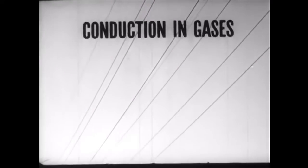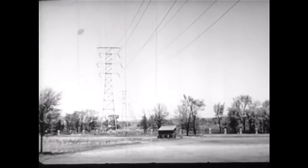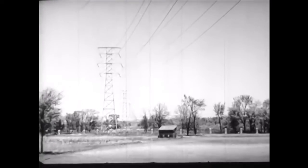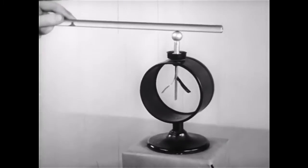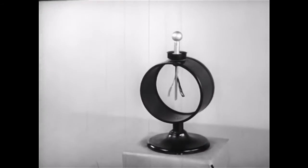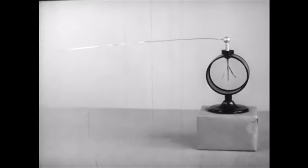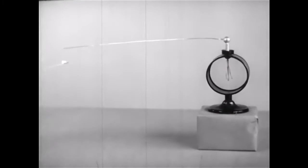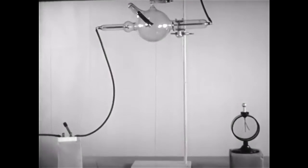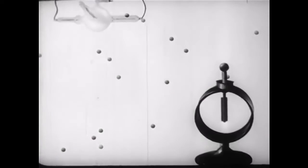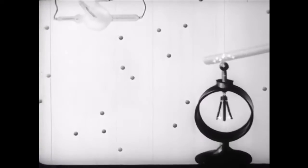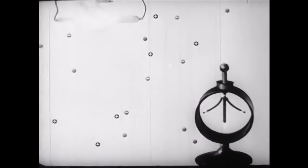To this astonishing conclusion, we are led also by experiments on the conduction of electricity through gases. Ordinarily, gases are non-conducting. Electricity normally does not leak off charged wires in direct contact with the air. Likewise, an electroscope will hold its charge almost indefinitely. If, however, a flame is held near a wire attached to the electroscope, the leaves collapse at once. Similarly, x-rays produced even at some distance cause the charged leaves to collapse. We can explain these phenomena if we assume that the flame and the x-rays caused air molecules to become charged, some positively and some negatively.